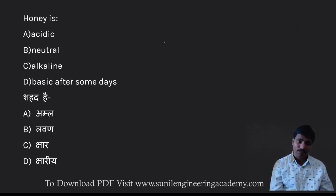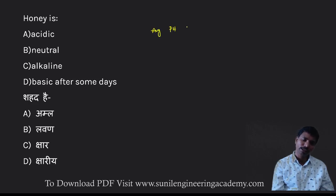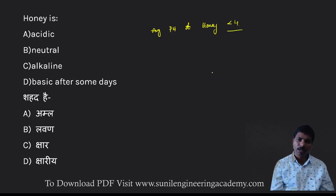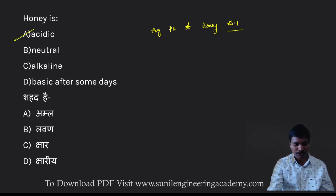Honey is — what type of substance? If you look at the average pH of honey, it contains many acids and its pH is less than 4, in the order of 4. A pH of 4 means it is acidic in nature. So the answer is option A — acidic in nature.